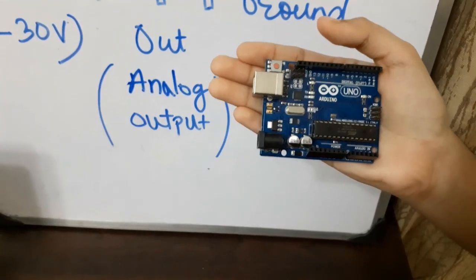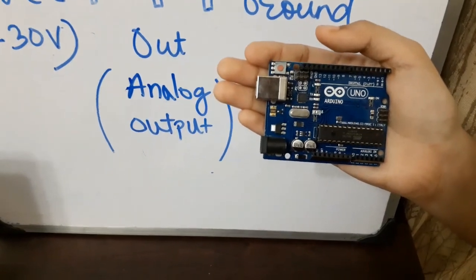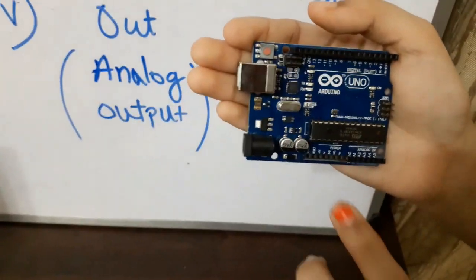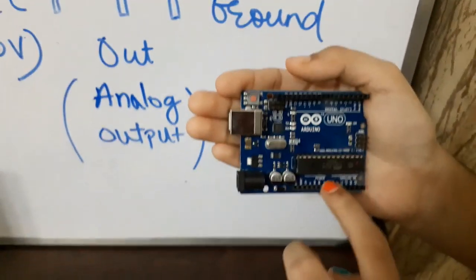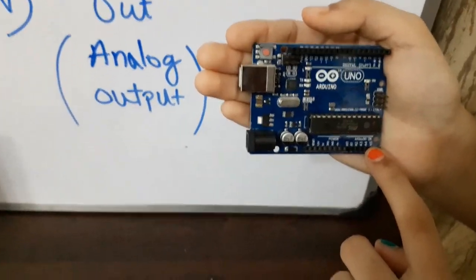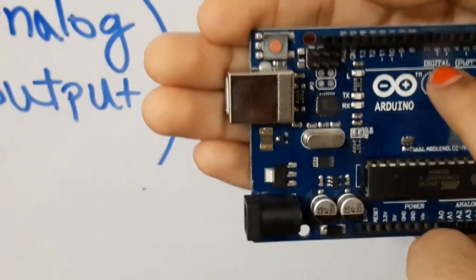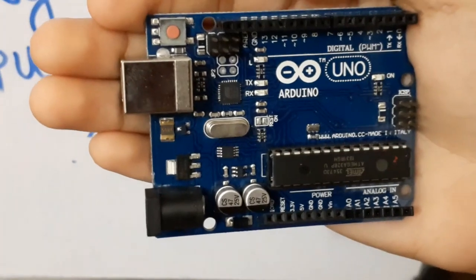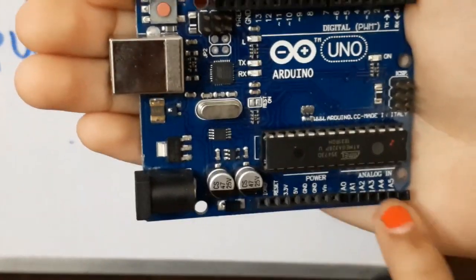Now, let us see the various pins of Arduino Uno board. At the left side, we have power pins and analog pins. And at the right side, we have digital pins. But we are going to use only power and analog pins.